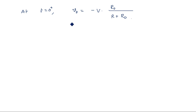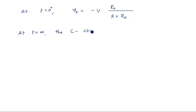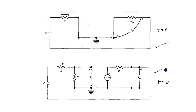At t equal to 0 minus and t equal to 0 plus, these cases have the same value because the capacitor is not changing instantaneously — even though time changes instantaneously, the capacitor will not respond. Now at t equal to infinity, the capacitor acts as an open circuit. Let us write the KVL for that equivalent circuit.